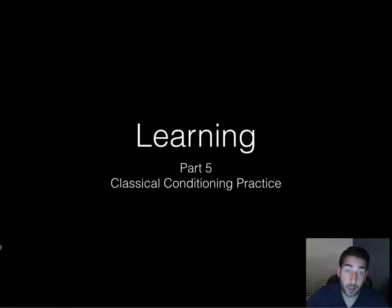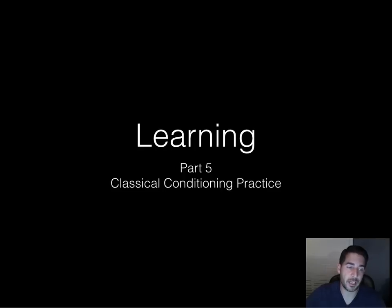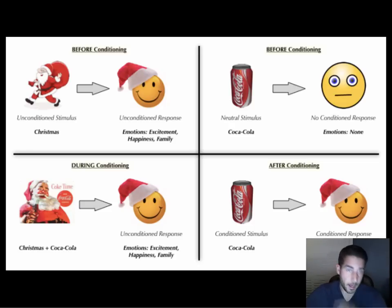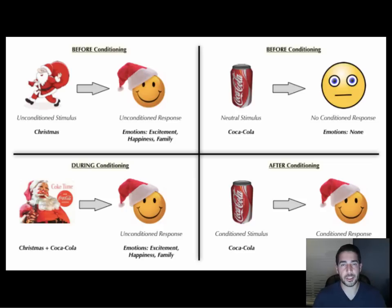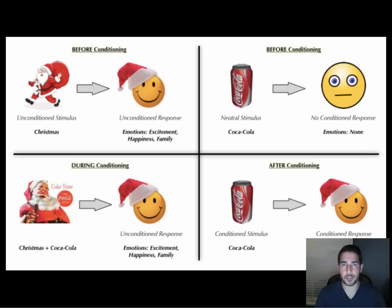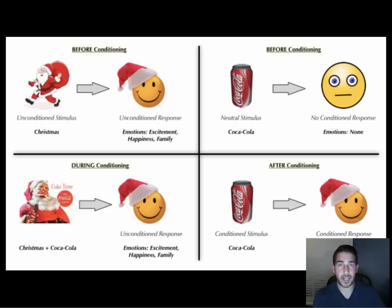Hey, part five — we're going to do some practice with classical conditioning because we need practice. Classical conditioning is something you don't have any control over; you make these associations with no control. Like Pavlov's dog: I don't have control when Pavlov brings the food, I don't have control when I salivate, and I don't have control when Pavlov rings the bell.